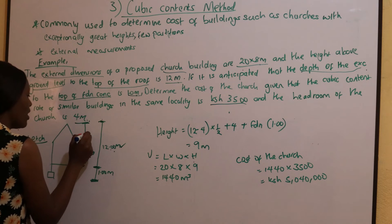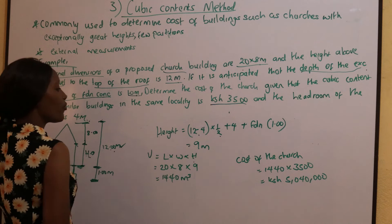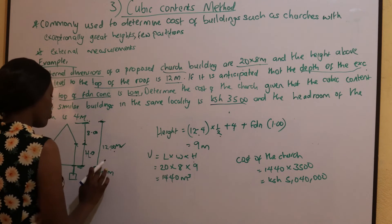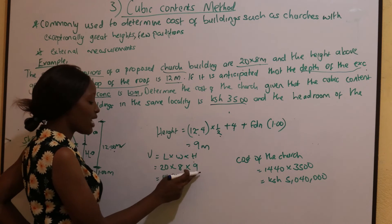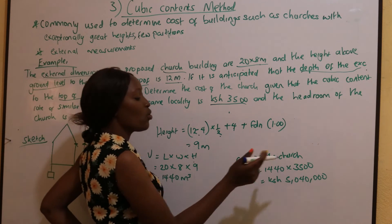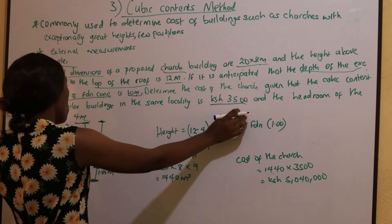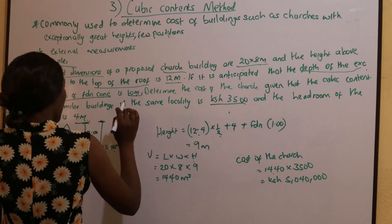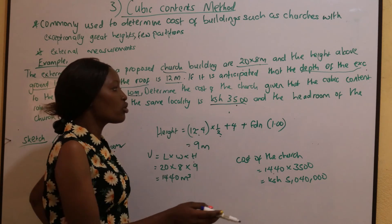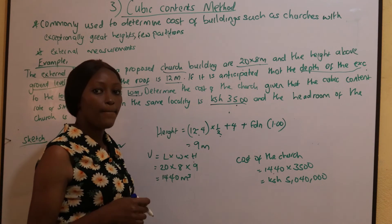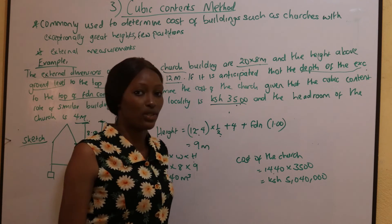So we take the volume as 20 times 8 times 9, which gives us 1,440 cubic meters. The cost of the church will be the total volume, 1,440, multiplied by 3,500 — which was the cubic content rate per cubic meter for similar buildings in the same locality. That gives us 5,040,000 shillings.